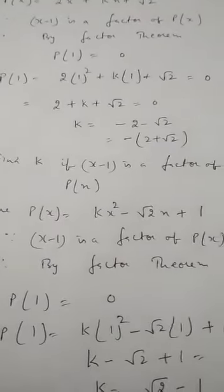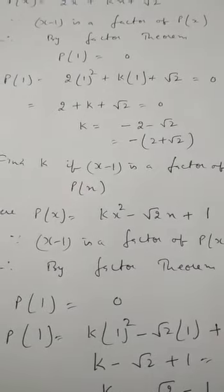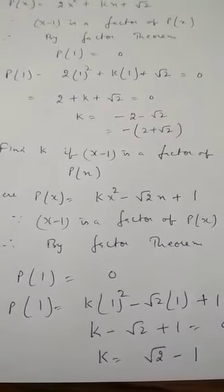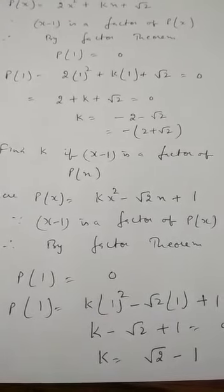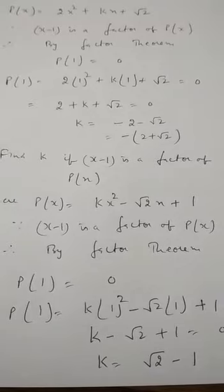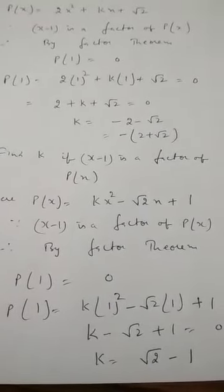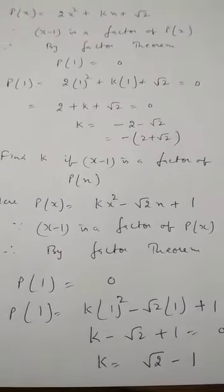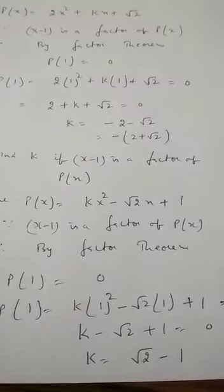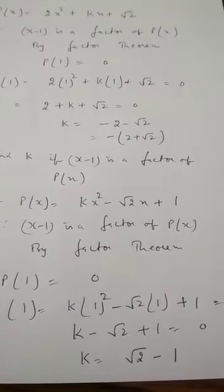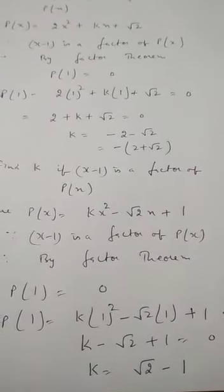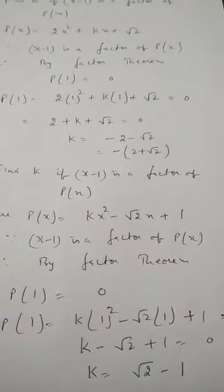Next example: find k if x - 1 is a factor of p(x), where p(x) = kx² - √2x + 1. Again, x - 1 is a factor of p(x), so by the factor theorem, p(1) = 0. Replacing x by 1: k(1²) - √2(1) + 1 = 0, giving k - √2 + 1 = 0, therefore k = √2 - 1. So now we are able to apply both remainder theorem and factor theorem.